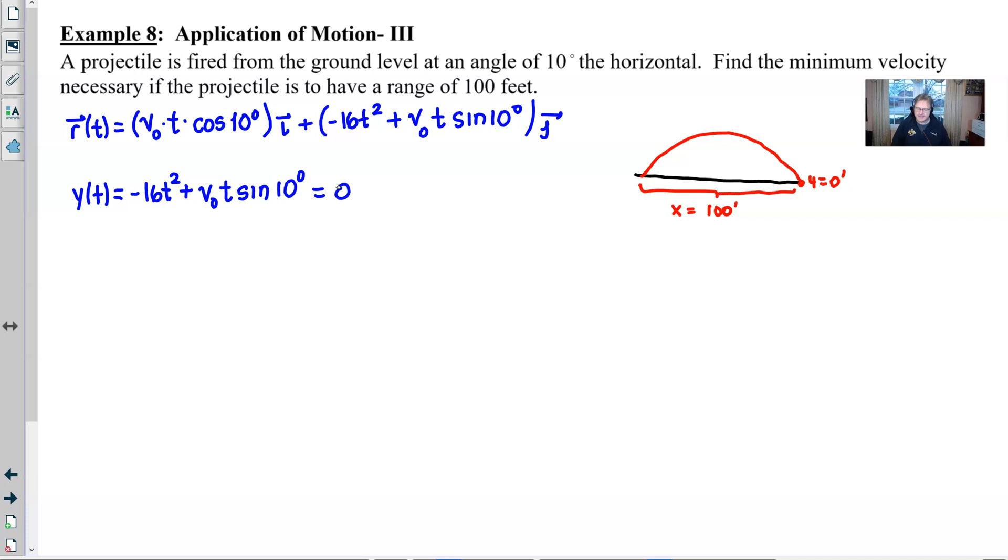Now the problem with solving that is that we do not know the value of v₀, we do not know the value of t. We have an equation with two variables on our hands which means we need a system of equations in order to solve this. And that other equation is going to involve the x of t which is just v₀t times cosine of 10 degrees and we want this to be equivalent to 100.